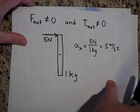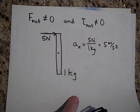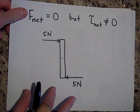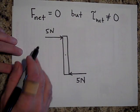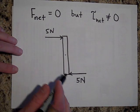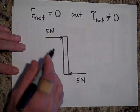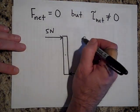Here's an example of a net force being equal to zero, but the net torque not being equal to zero. So the net force on this is, let's see, five newtons plus negative five newtons is zero newtons. So A will be zero.